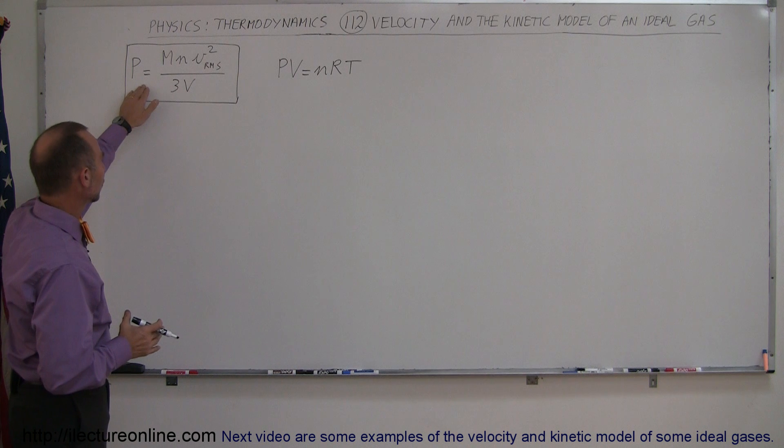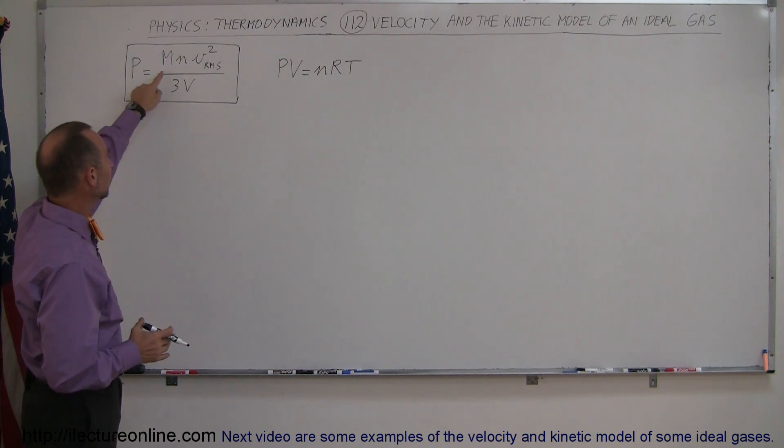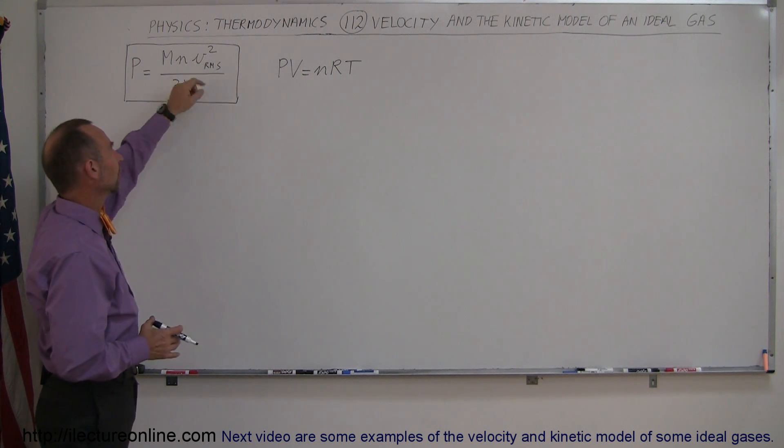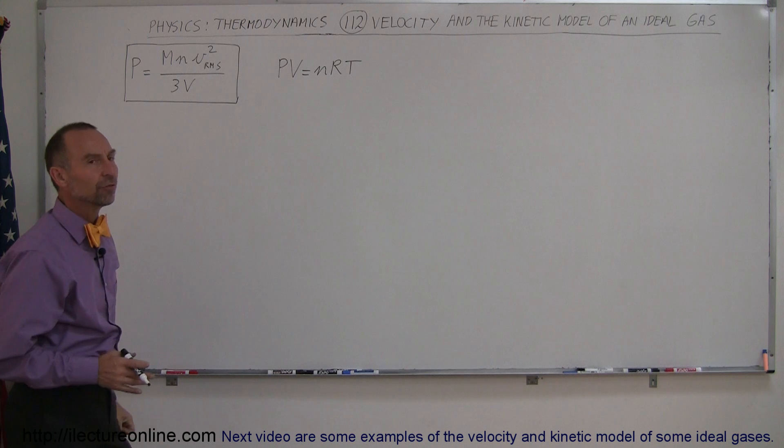In the previous video we discovered that the pressure in the box is going to be equal to the molar mass of the gas times the number of moles of gas in the box times the RMS velocity squared divided by 3 times the volume of the box.